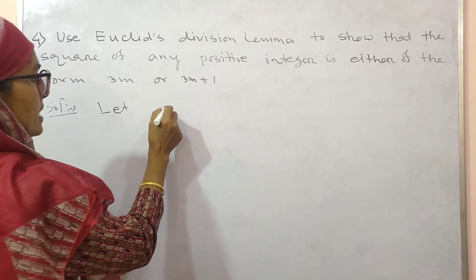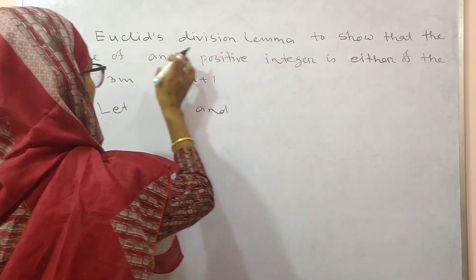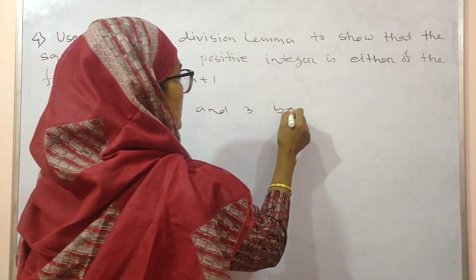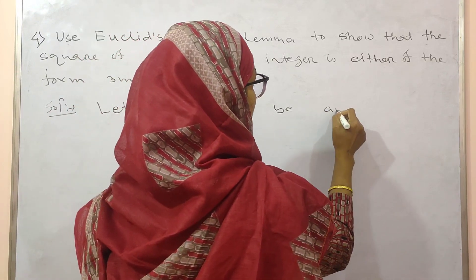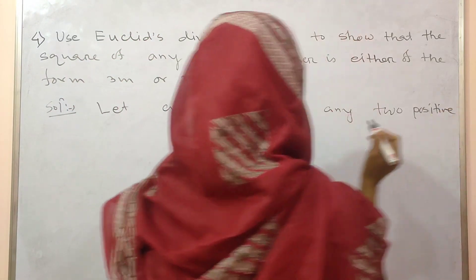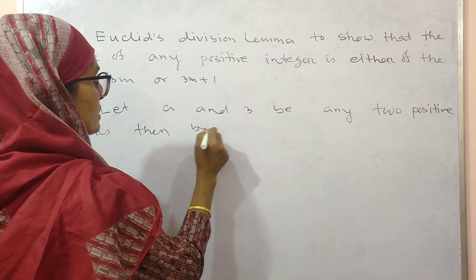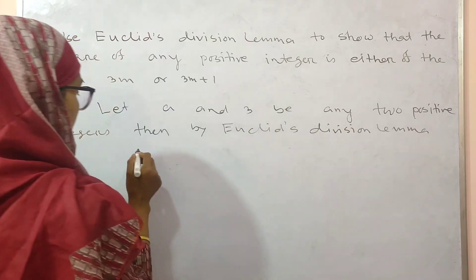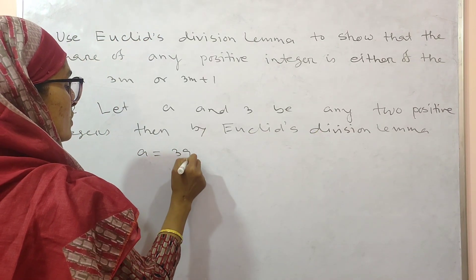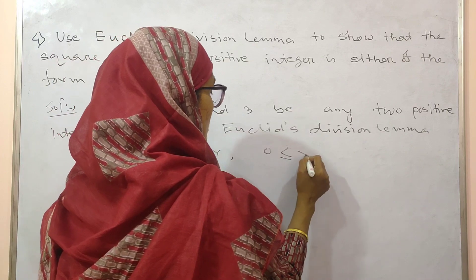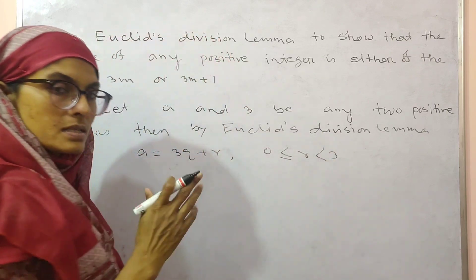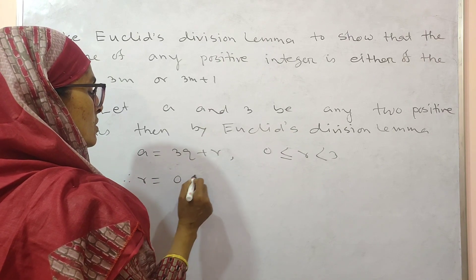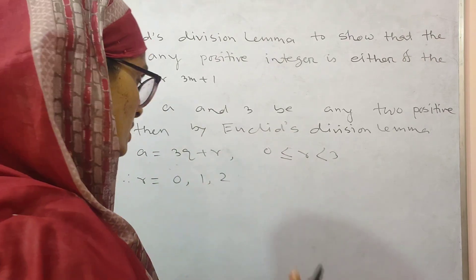Write down: let A and B be positive integers. Here you have to choose 3. Then by Euclid's division lemma, A equal to 3q plus r, where 0 ≤ r < 3. This is the condition. Therefore r can equal 0, 1, or 2.